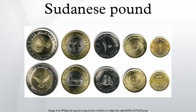In April 1957, the Sudan Currency Board introduced notes for twenty-five and fifty piastres, one pound, five pounds and ten pounds. Note production was taken over by the Bank of Sudan in 1961. Twenty-pound notes were introduced in 1981, followed by fifty pounds in 1984 and one hundred pounds in 1988.